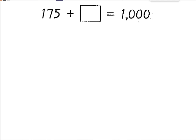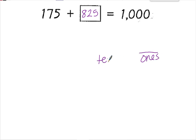We can do the same thing when we're finding missing add-ins for sums of 1,000. So here I have 175 plus something equals 1,000. The number I'm missing is actually 825. Let's go ahead and look at this. We have our ones place, the tens place, and the hundreds place.